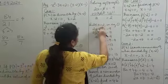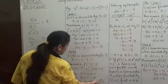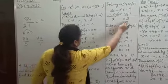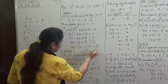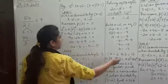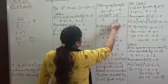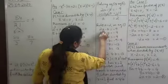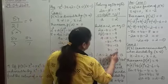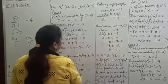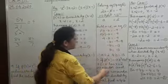Now substitute A equals 2 into equation 1: 2 into 2 minus B equals minus 9, and on working this out we find B equals 13. So we have found A equals 2 and B equals 13.